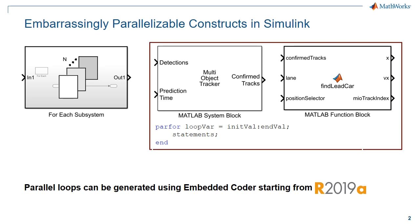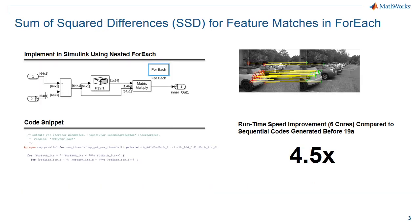Taking advantage of these parallelizable constructs can significantly boost the runtime performance of your generated codes for many computationally intensive applications. Starting from 19A, Embedded Coder will provide an option for you to generate parallel loops for for-each and parfor in MATLAB function blocks and MATLAB system blocks. I'll present two examples to demonstrate the runtime performance boost you can get by generating parallel loops for Simulink models.